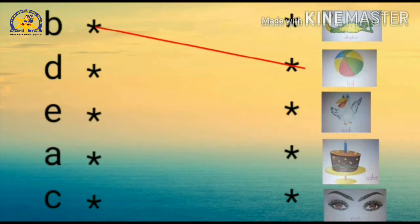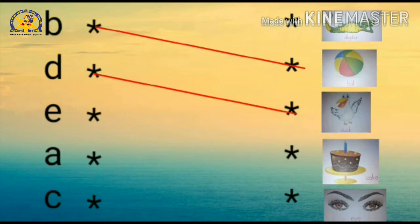Now, what's the next letter? Correct! It's letter D. D for what, children? D for duck. Correct! So match the letter D with duck. D for duck. Very good!